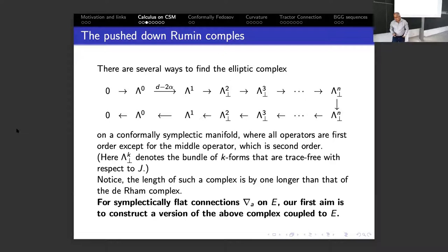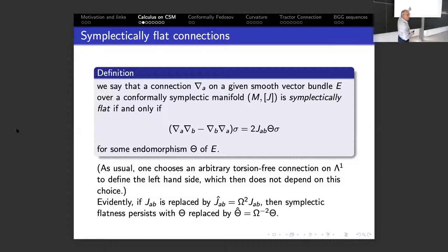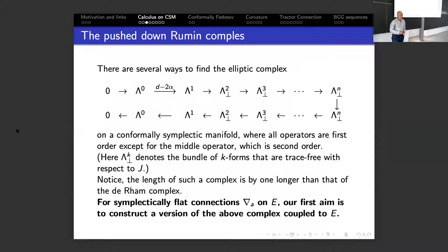There is a question: on the previous slide it says sigma section E — why was there a remark about torsion freedom, which makes sense only for the tangent bundle? In order to iterate the covariant derivative, you need to know how to do that because the value of the first covariant derivative is already lambda^1 tensor E. Therefore to iterate you have to choose some auxiliary connection — you use it to iterate, but the outcome of the commutator will be the same independent of the choice of torsion-free connection.